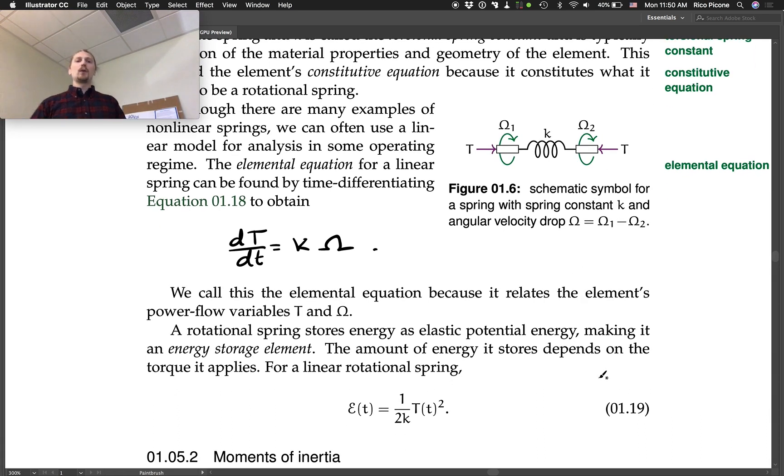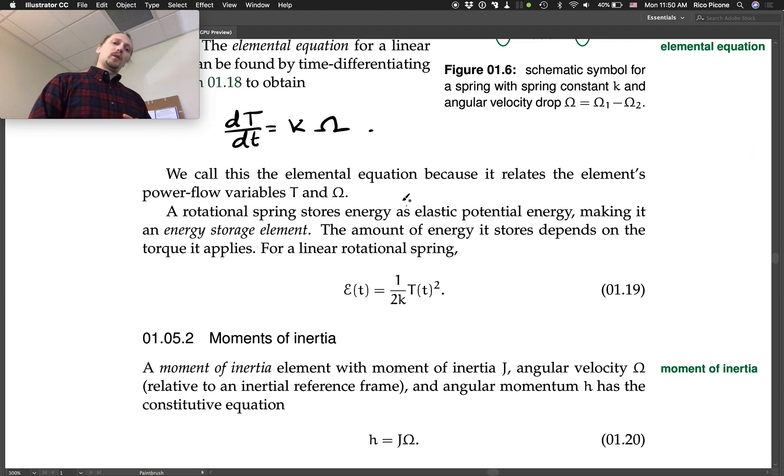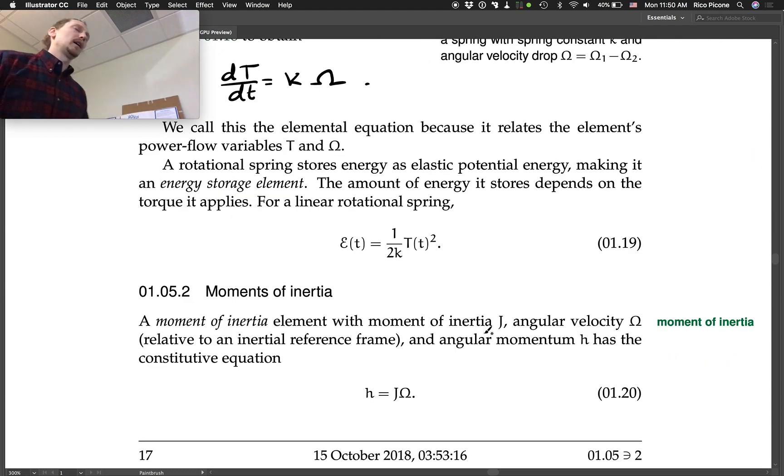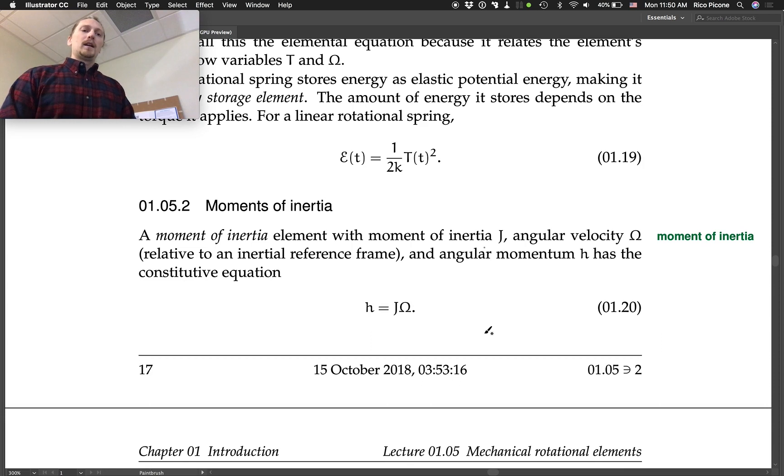The rotational spring stores energy as elastic potential energy, making it an energy storage element. The amount of energy it stores depends on the torque it applies. For a linear rotational spring, we've got an equation and this time it's not force, it's torque that is in there.